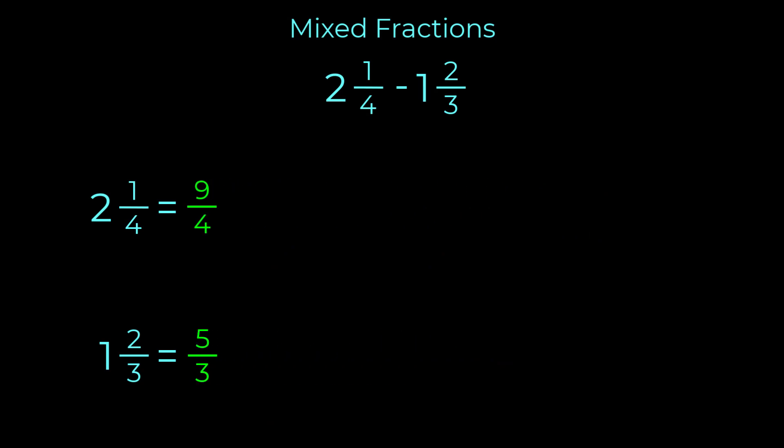Now we find the least common denominator between these two fractions. It is twelve. We want to express both nine over four and five over three as equivalent fractions, each with twelve in the denominator.